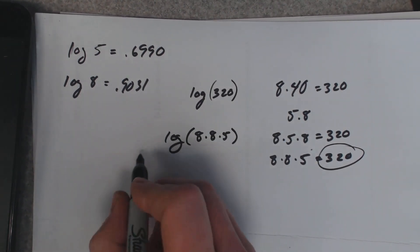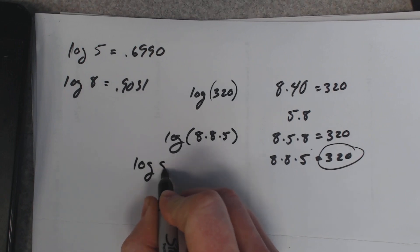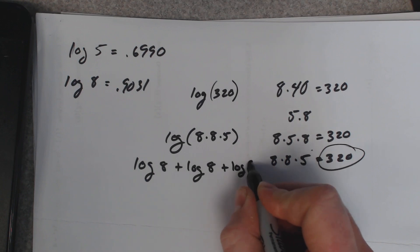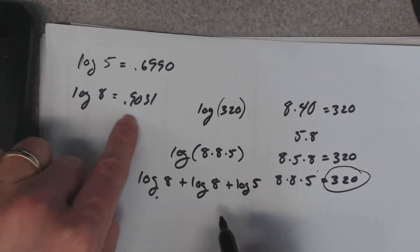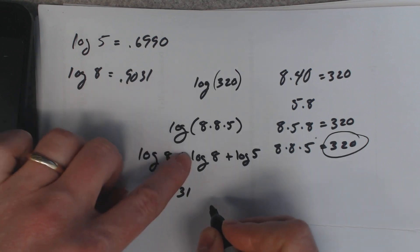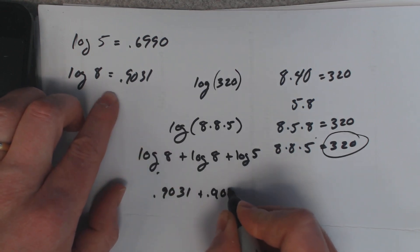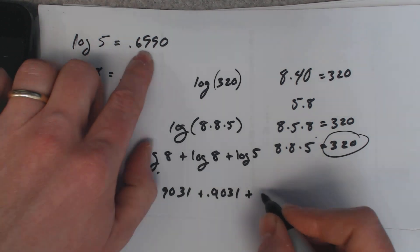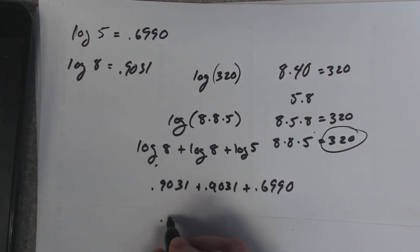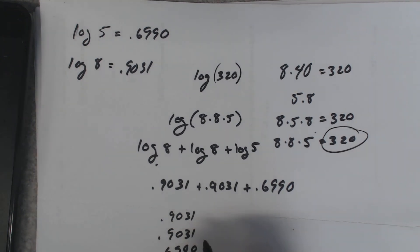It's log 8 plus log 8 plus log 5 and I know what these values are, they're right here. So 0.9031 plus 0.9031 plus 0.6990.